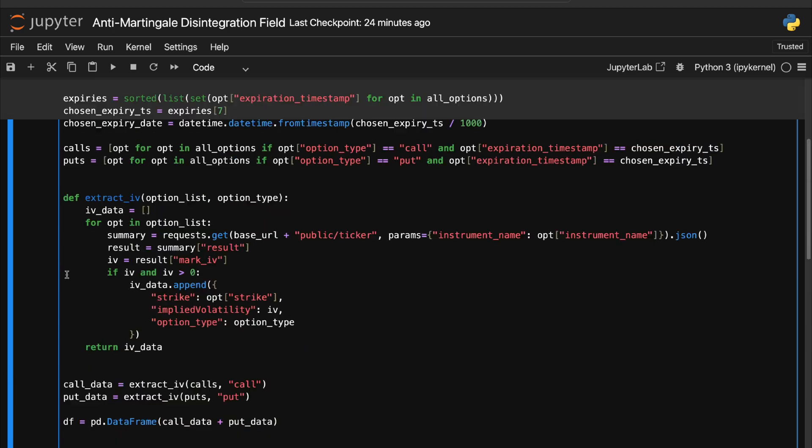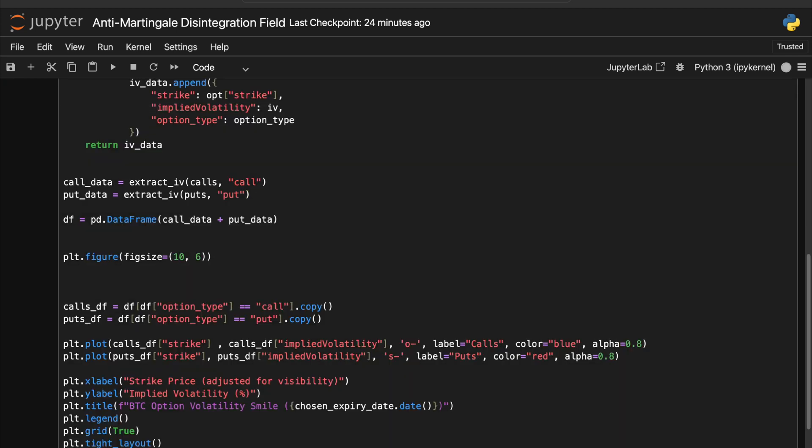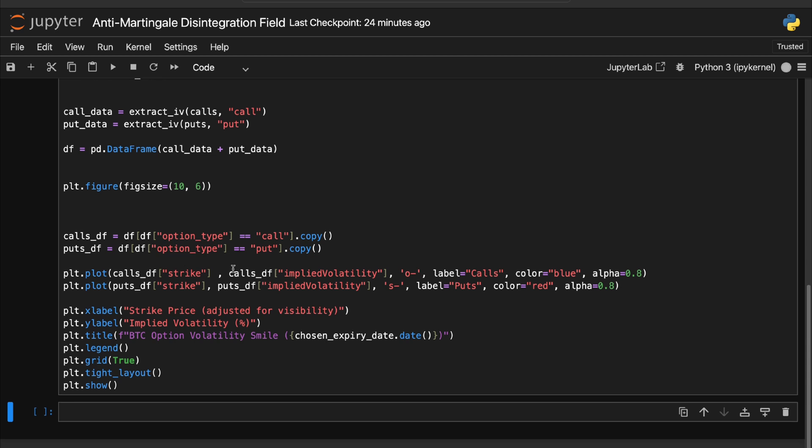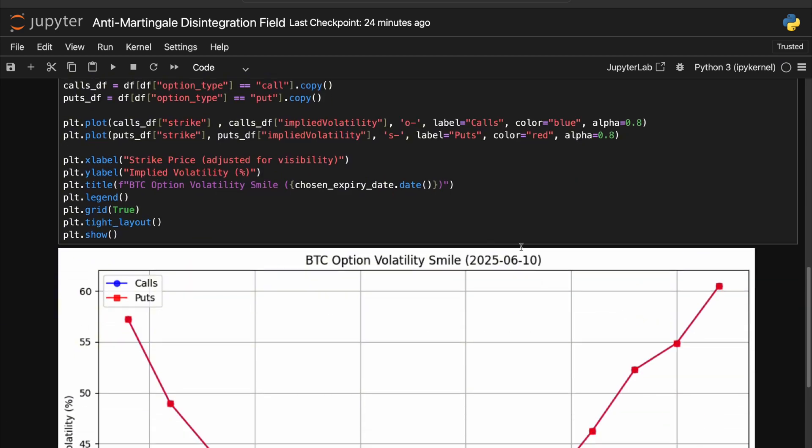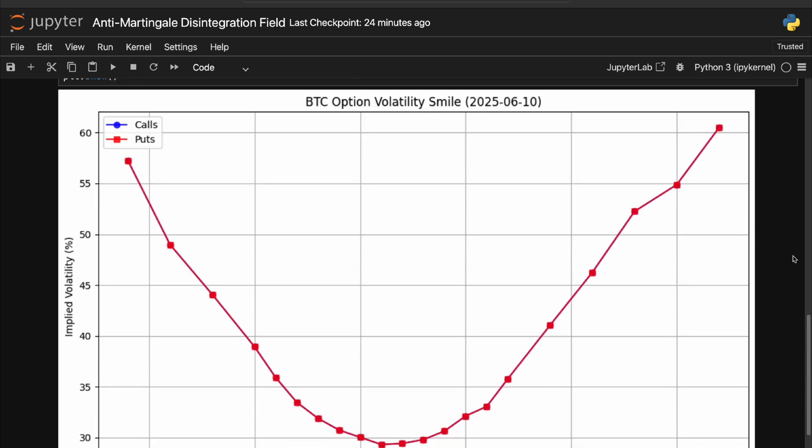Now last but not least, let me quickly show you how this is looking for another expiry. So let's say we take element number two and probably we are landing somewhere in June again. So just execute that again and you will get a volatility smile for June expiry. So this is in, what is that, three days and you have a similar story as in my first slide here. So that's it. With this setup, you can generate your own live volatility smiles for any expiry, any asset on Deribit, and adjust the view however you like.